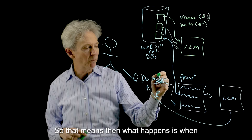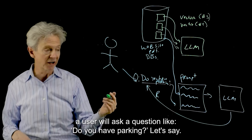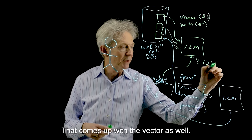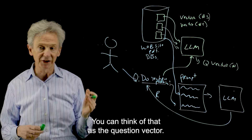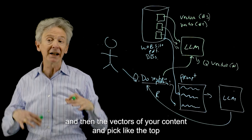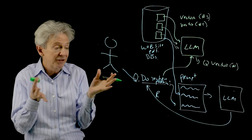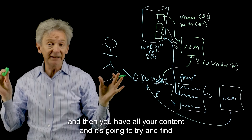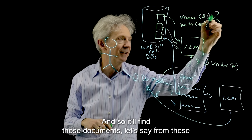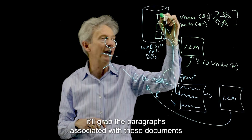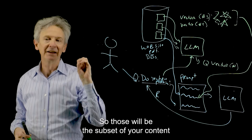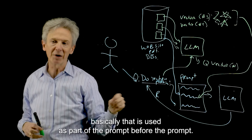So when a user asks a question like do you have parking, that question is also sent to the LLM in real time, right after the user asks it. That comes up with a vector as well — you can think of that as the question vector. Then we do a quick mathematical comparison between the vector of the question and the vectors of your content, and pick the top five documents that are closest to the question. So 'do you have parking' will be a vector, and the system will find the five documents that talk the most about parking, then grab the paragraphs associated with those documents and use that content in the prompt.